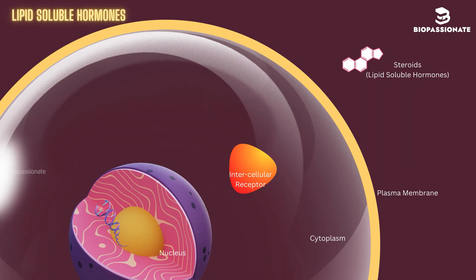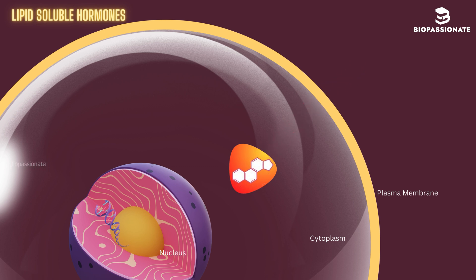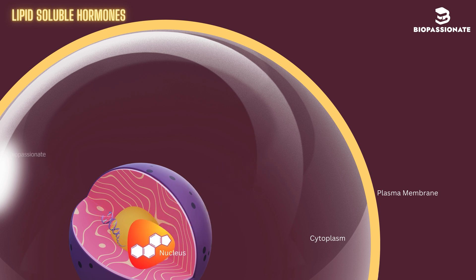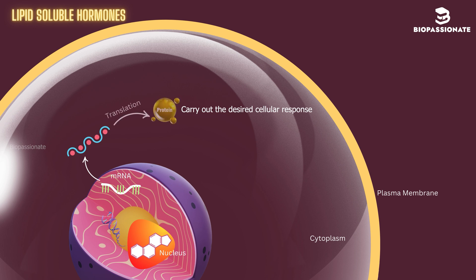Lipid-soluble hormones like steroids easily pass through the cell membrane as they are hydrophobic. Once inside the cell, they bind to intracellular receptors forming a hormone-receptor complex. This complex moves to the nucleus and directly regulates gene expression, leading to the synthesis of specific proteins that carry out the desired cellular response.